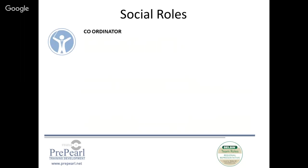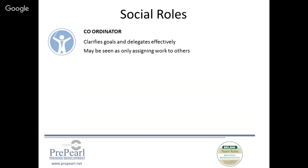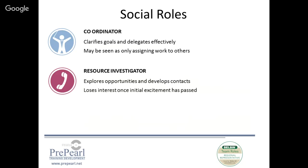The social roles: the Coordinator — symbolized by a conductor of an orchestra — these are individuals who have a fantastic understanding of the goal and are able to spot who is good at what, giving them the ability to delegate effectively. They may be seen as basically assigning work to others, so it's important for coordinators to manage this. The Resource Investigator — symbolized by a phone — highly networked individuals, great at exploring opportunities, fantastic at developing contacts, extroverted in nature. Their flip side: they may lose interest once the initial excitement has passed and want to move on when things get mundane.